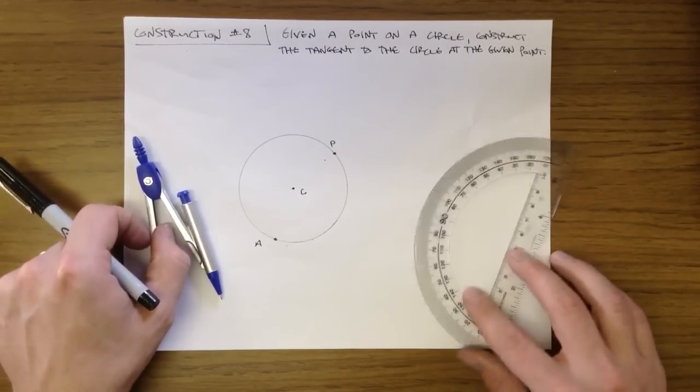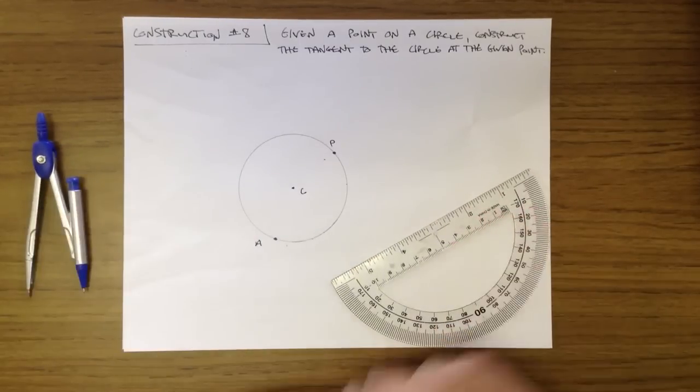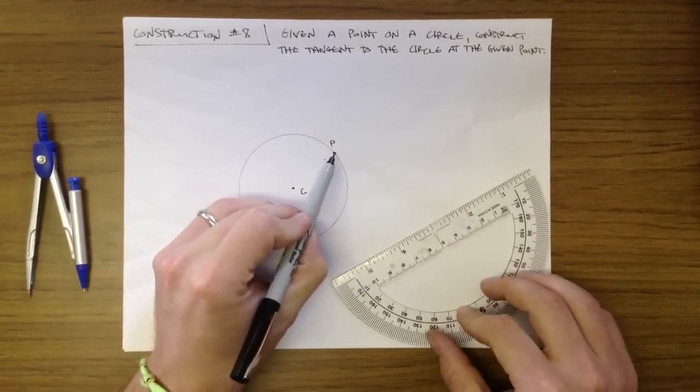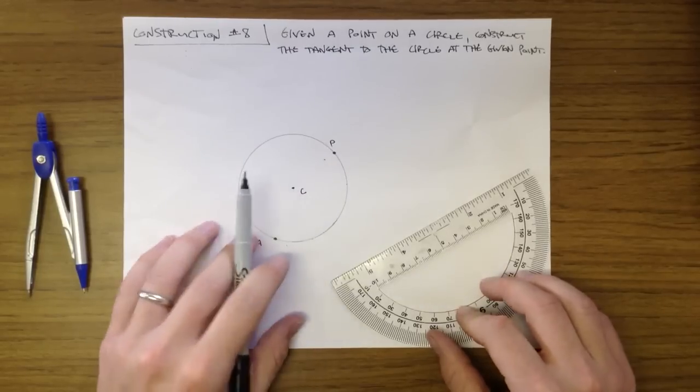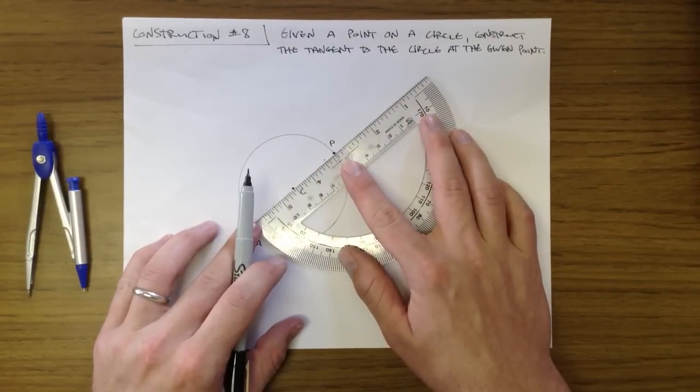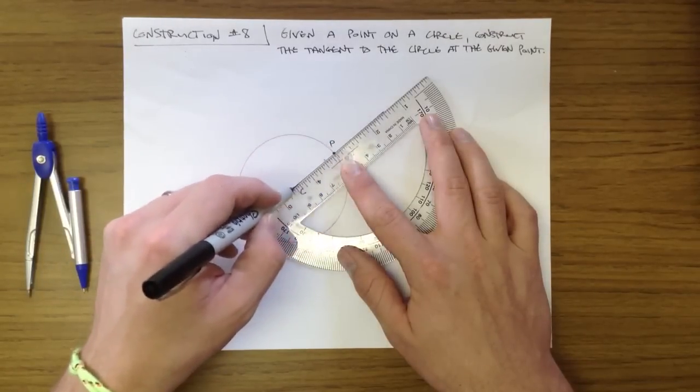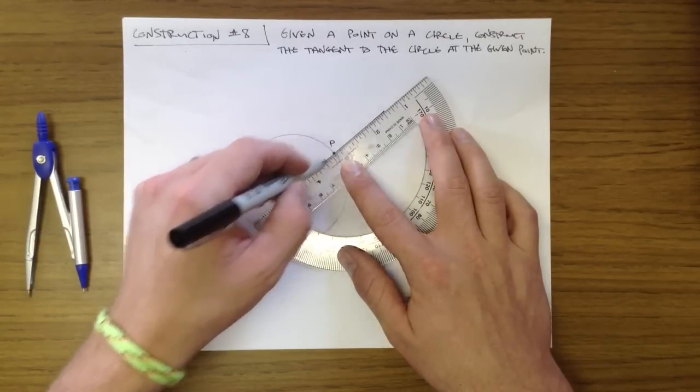So the properties that we're going to be using here is the idea of when you have a point of tangency, which A and P both will end up being because we're going to draw a tangent at that point, the segment that connects the center to that point of tangency known as the radius is going to be perpendicular to the tangent.